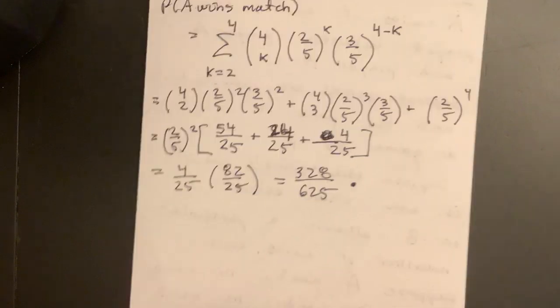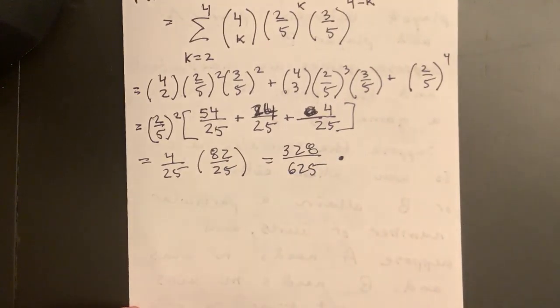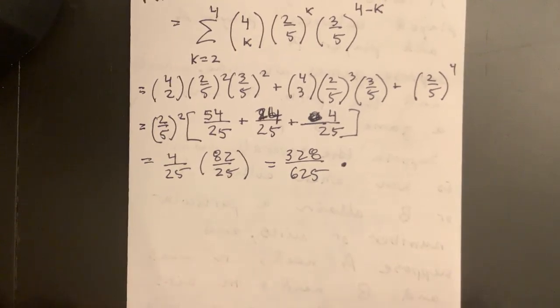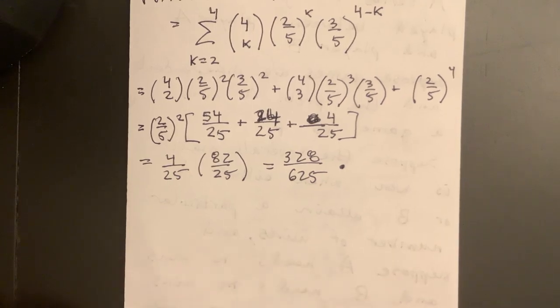All right, so even if you only have a 40% chance to win each game, it's better to be up two games to one in a seven-game series, I suppose. According to this, you have slightly more than half a chance to win the series. All right, thanks. Next one's on conditional probability. Okay.